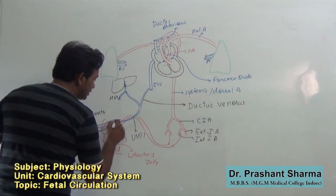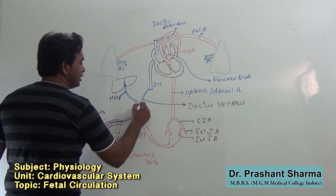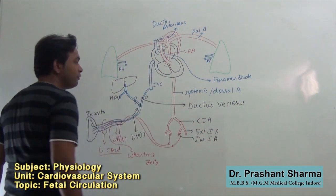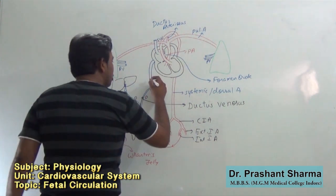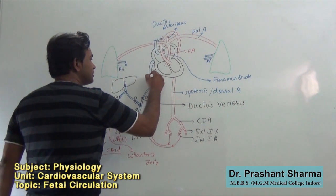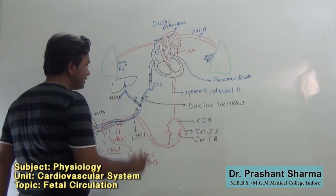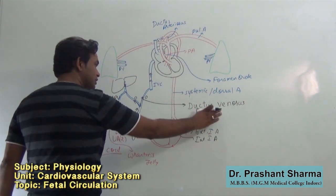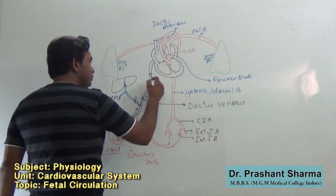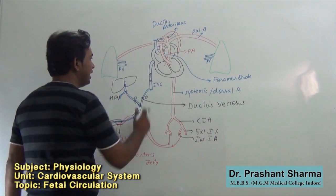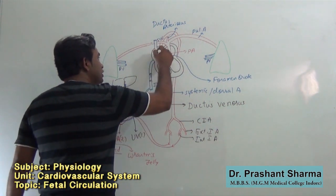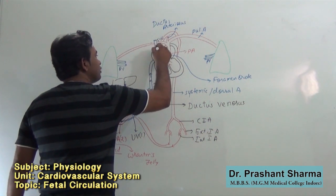This oxygenated blood travels and divides into two branches. When it combines with the inferior vena cava, which is collecting deoxygenated blood, the oxygenation is decreased — so we can say a mixed type of blood supply enters the inferior vena cava at this point. The ductus venosus carries oxygenated blood, and the inferior vena cava was carrying deoxygenated blood, so mixed or decreased-oxygenation blood enters the inferior vena cava. Deoxygenated blood supply also enters from the superior vena cava.